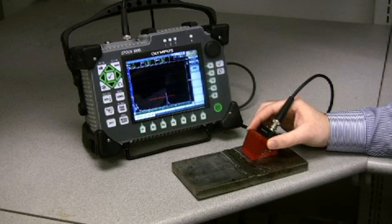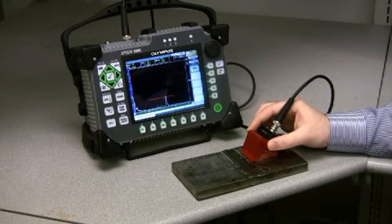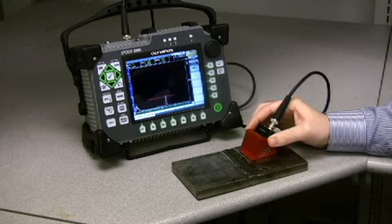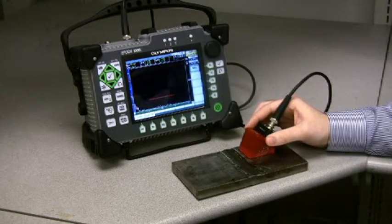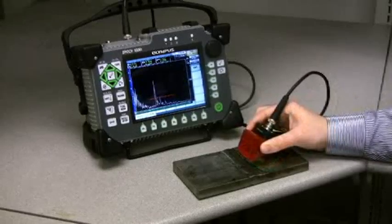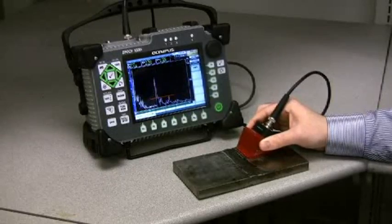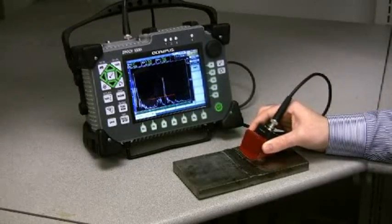The EPIC 1000 series conventional UT capabilities are versatile for multiple kinds of inspections and applications, including AWS defect weld rating. The instrument's full VGA resolution display provides easy interpretation of A scans while searching for defects.